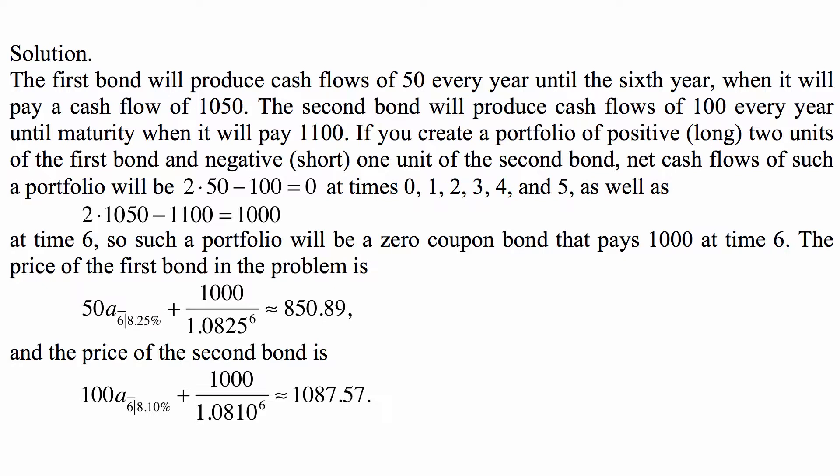And such a portfolio will be a zero-coupon bond that pays 1,000 at times 6. The price of the first bond in the problem is 50 times A angle 6 at 8.25% plus 1,000 divided by 1.0825 to the sixth. This is the basic franc formula for the price of a bond, and that's 850.89.